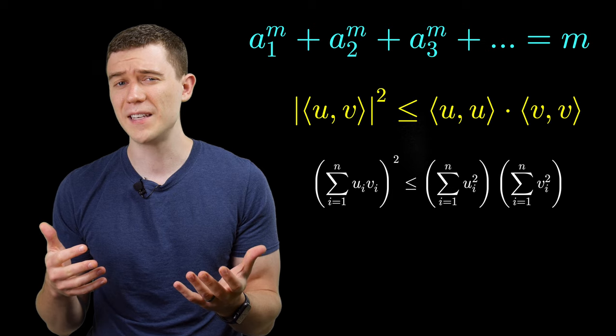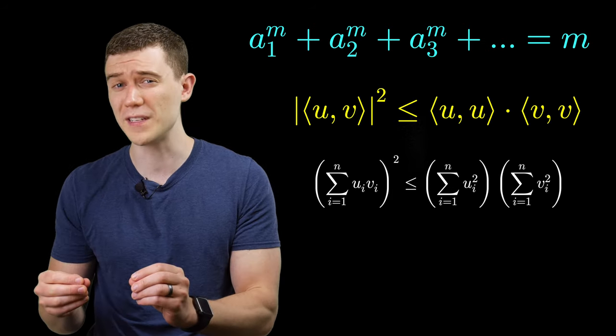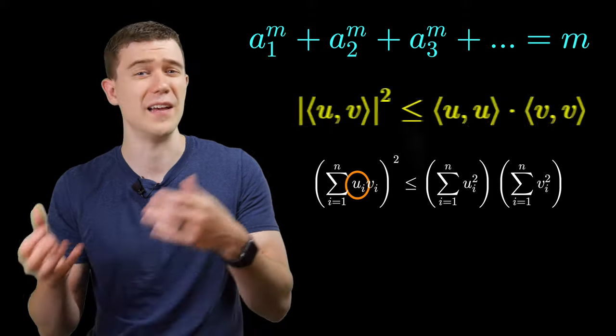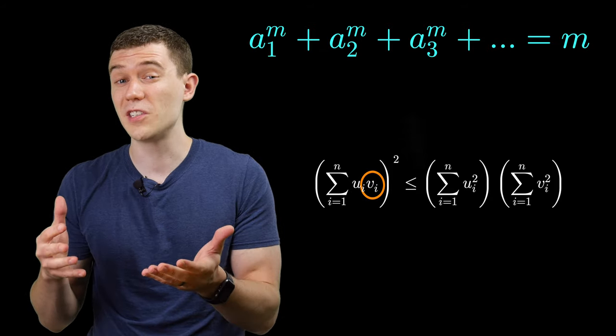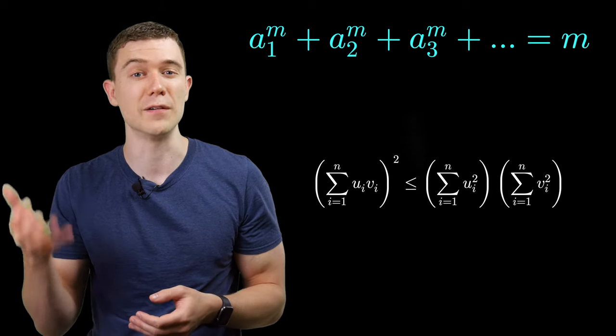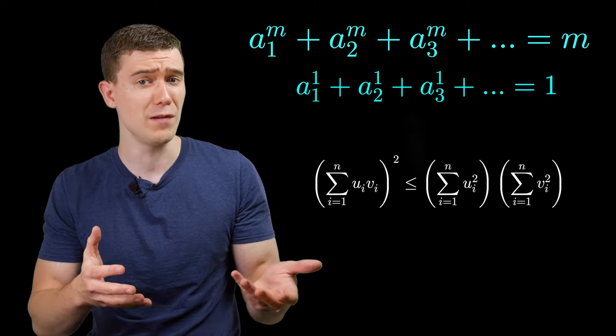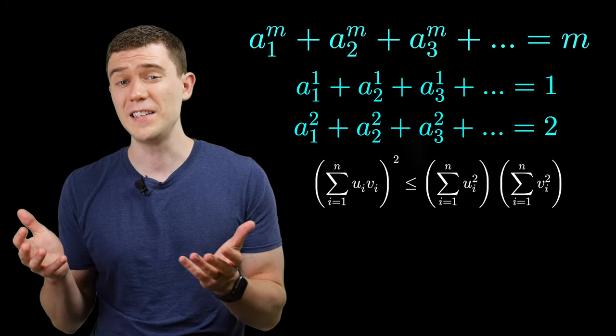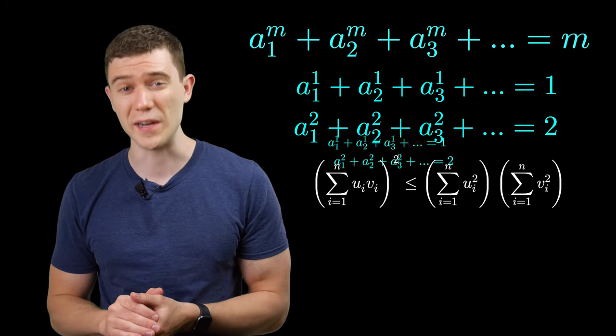How exactly is this helping us, because this is talking about two different sequences, u sub n and v sub n? Well, let's just look at two versions of the sequence we're asked about by picking different values for m. What if we look at m equals one and m equals two? Let's just throw these two sequences into our inequality.